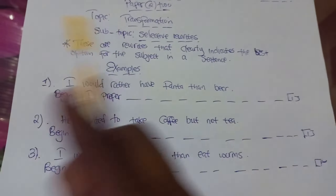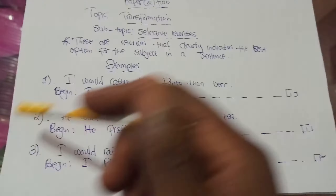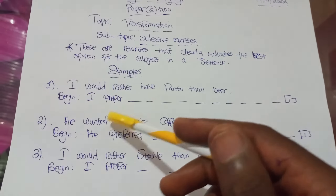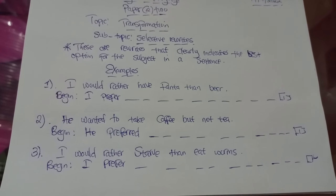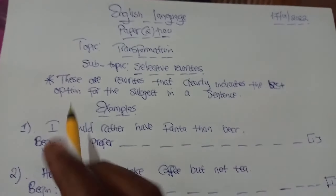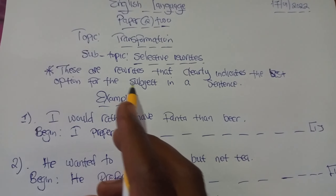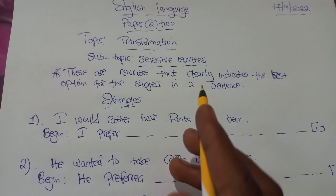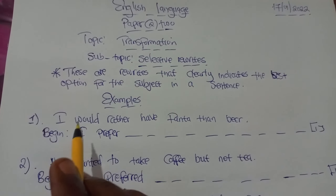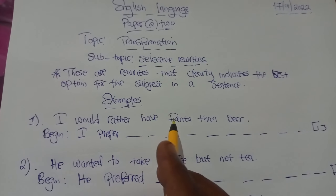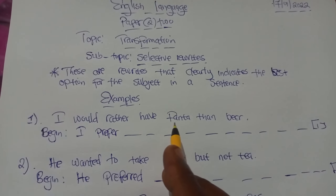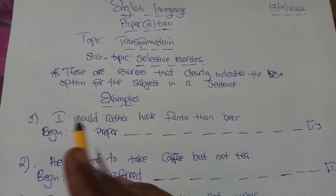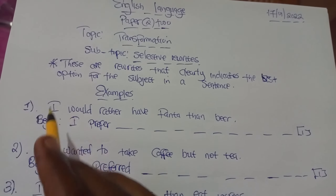I'm back again with another type of rewrites, which is going to consider linking 'prefer' and 'rather' in different sentences while we try to maintain the same meaning. These are rewrites that clearly indicate the best option for the subject in a sentence. For example, 'I would rather have Fanta than beer' means the best option between the two beverages is Fanta — Fanta is the best option for the person being talked about.